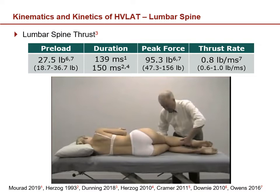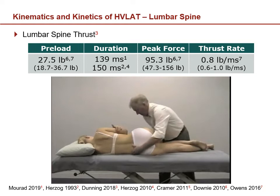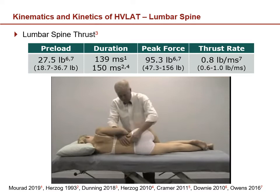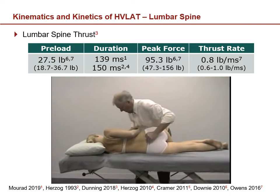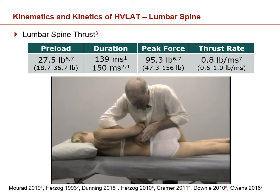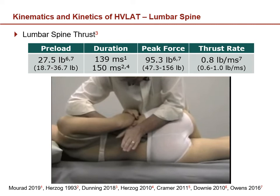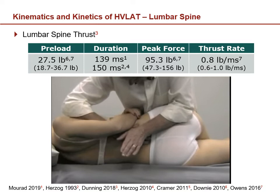The preload force applied prior to the thrust is about 27 pounds of force. The duration is between 139 and 150 milliseconds. The peak force applied is about 95 pounds of force, and the thrust rate is 0.8 pounds per millisecond. You can see the technique here with the patient in a neutral spinal position. From what was discussed previously, note the coupling motions applied: she's in right rotation for this neutral spinal technique. The operator is using the pronated position at the hip for the bottom segment, and a forearm or elbow grasp for the upper, with the thrust applied there.